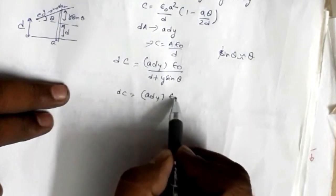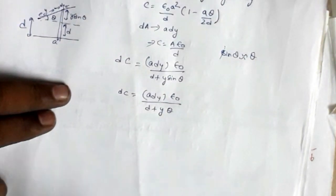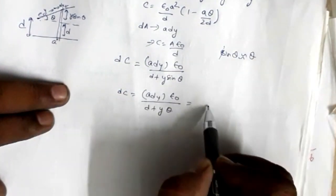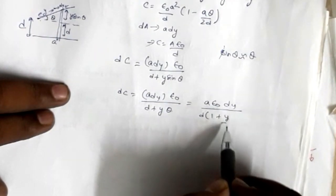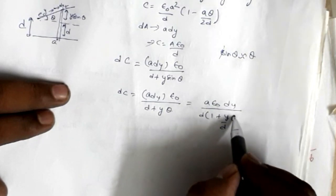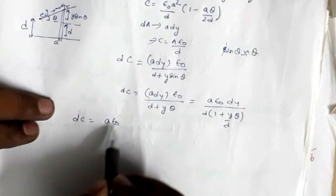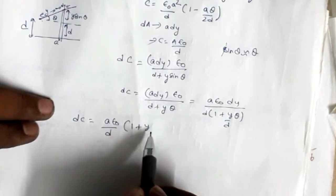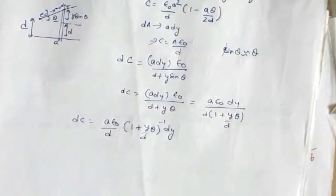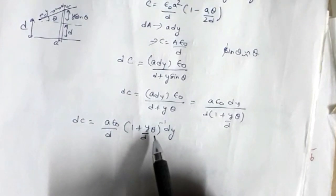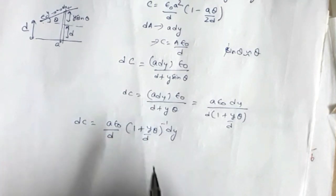With this approximation, the expression becomes dc = a·dy·ε₀ / (d + y·θ). This can be written as dc = a·ε₀·dy / [d·(1 + yθ/d)]. Taking the term in the numerator using the binomial theorem, since theta is very small, the term yθ/d is much smaller than 1.